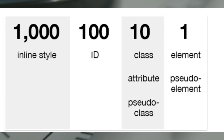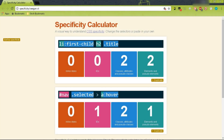With this table you can check the specificity value of any CSS rule. You just have to add points by checking which selectors you have used. So if you have written multiple selectors for a single element, this table will tell you which rule will get applied. If you don't want to calculate specificity on your own, there are specificity calculators available on the internet. I have given the link to a specificity calculator in the description below.